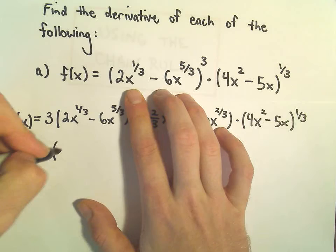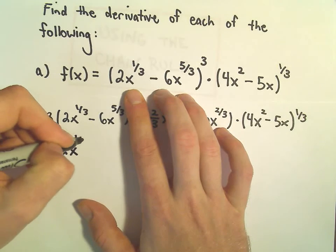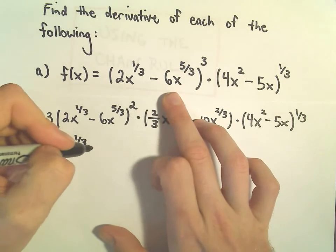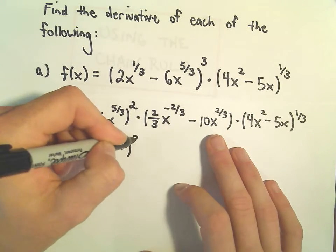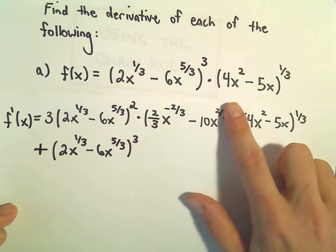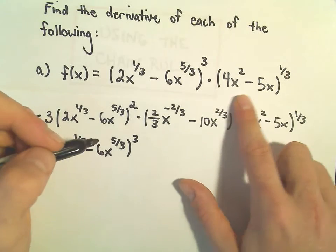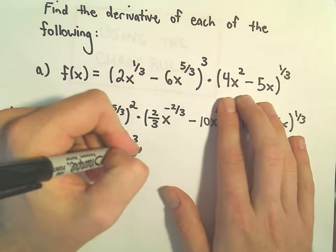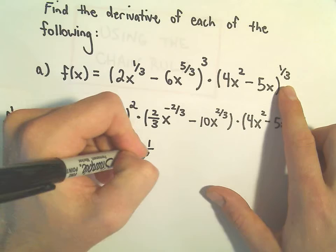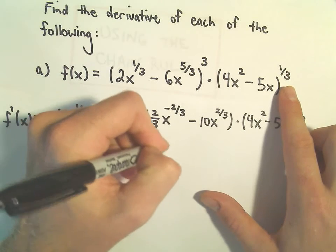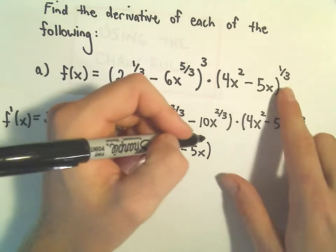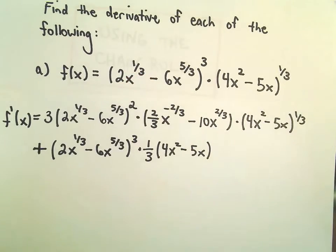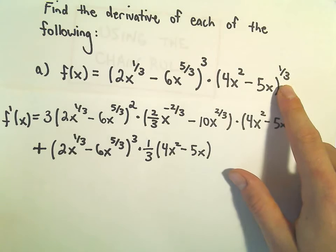Now I'm going to leave the first factor alone. So 2x to the 1/3 minus 6x to the 5/3 power cubed, we'll just leave that part alone. And now if we take the derivative of the second factor, we've got to use the chain rule. So the 1/3 will come out front. We leave the inside stuff alone: 4x squared minus 5x. We have to take 1 away from the exponent.